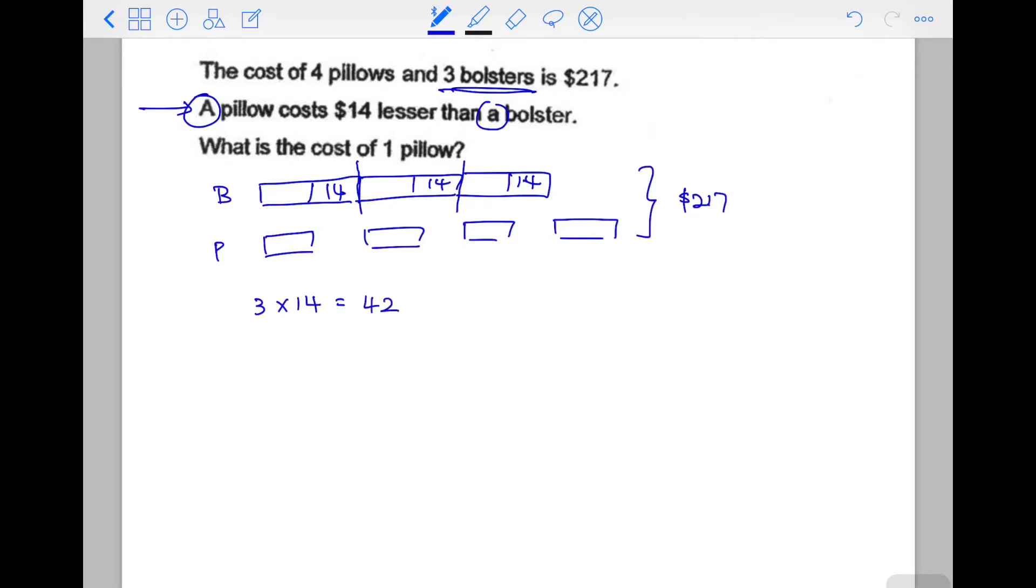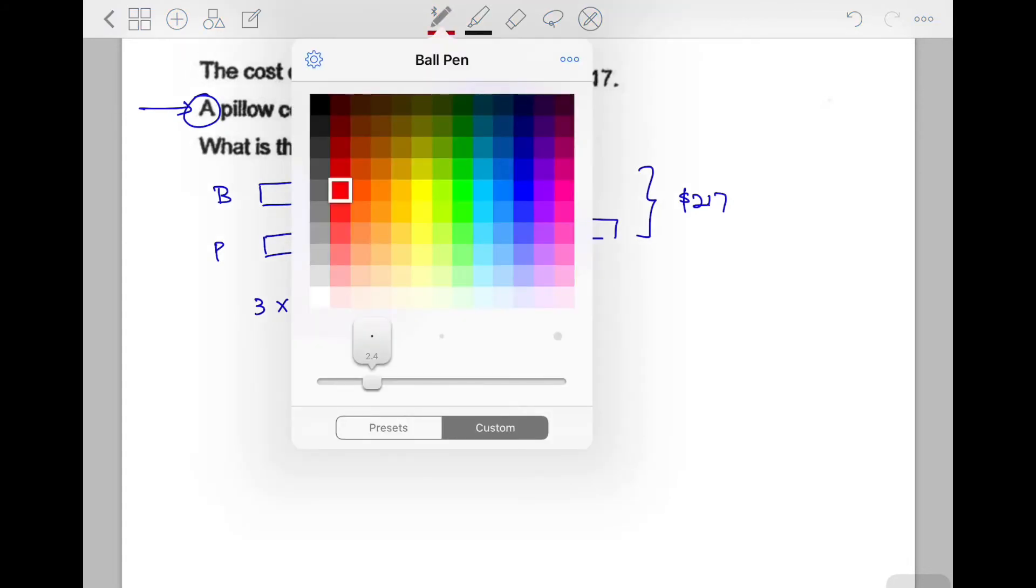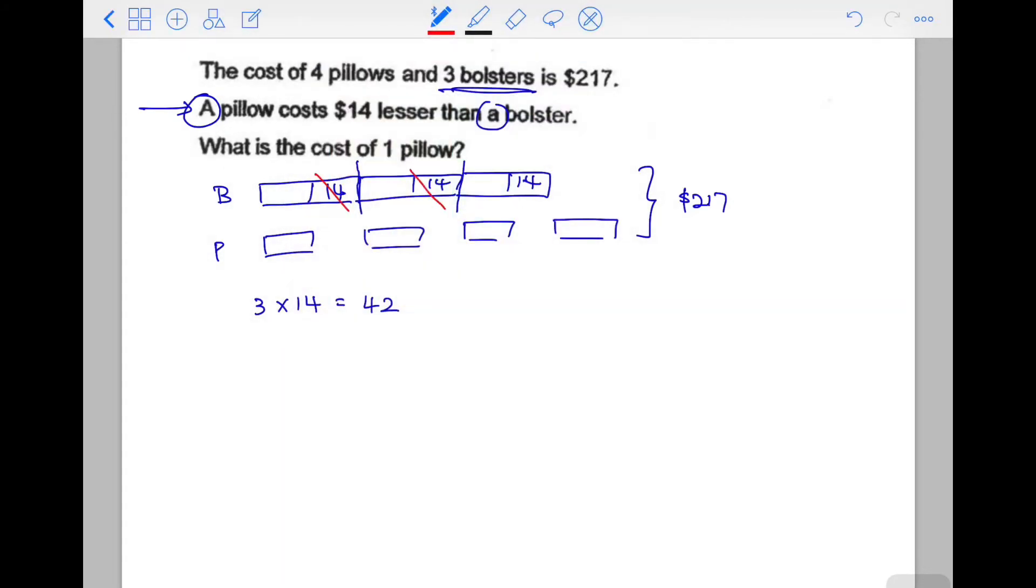Subtracting them means I cancel each $14 difference—they're no longer there. If I erase them, the money also gets less, which means I'm subtracting 42 from the total.